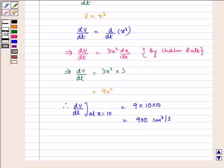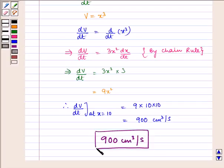Hence, volume of the cube is increasing at the rate of 900 cm³/s when edge is 10 cm, and this is the required answer. I hope you understood this question. Bye and have a nice day.